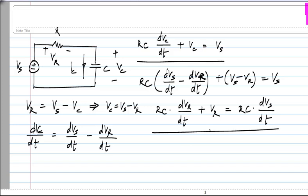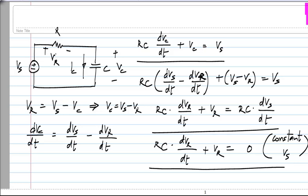And if we do know that Vs is a constant, we will get Rc times d Vr by dt plus Vr equals 0. This is if you know that Vs is a constant. The important thing to note is that the left hand side of that and the left hand side of that are in the same form. The coefficient of the first derivative is Rc and the coefficient of Vr is 1.